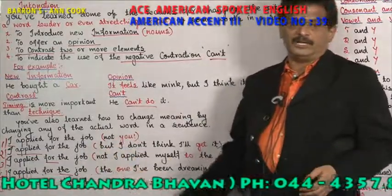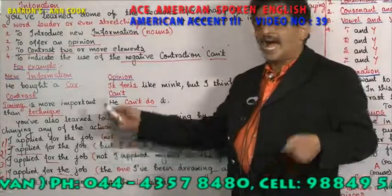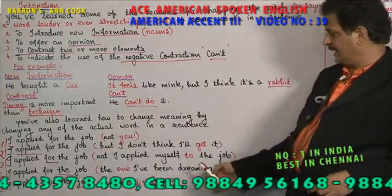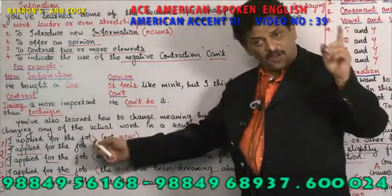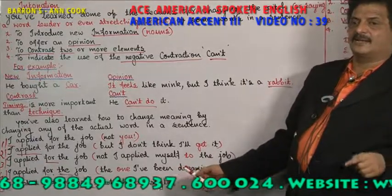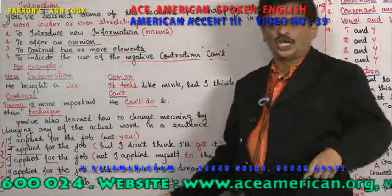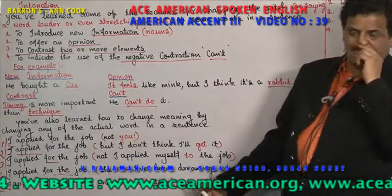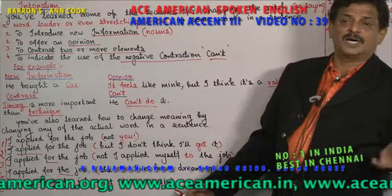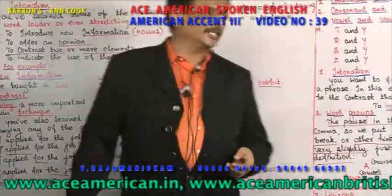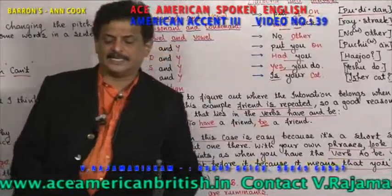For negation with 'can't': 'I can't do mathematics' — stressing 'can't.' 'I applied for the job' — practicing the five stress variations again: stressing each word in turn to show how the meaning changes.